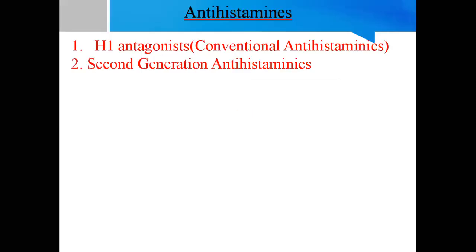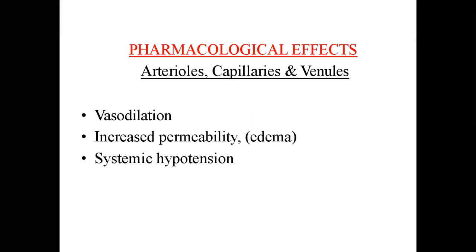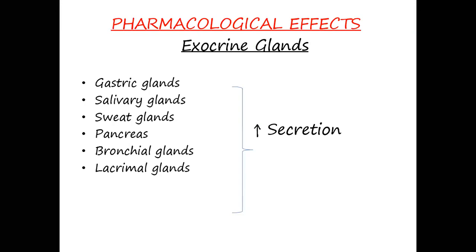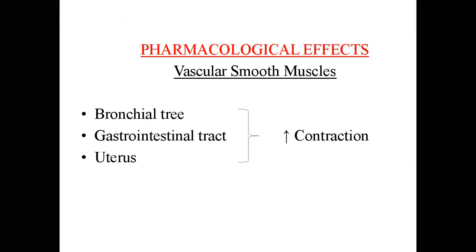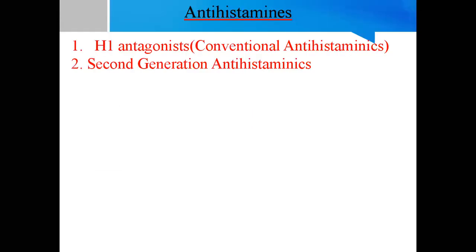Next is antihistamines. Antihistamines — mostly called histamine antagonists — it is very simple: where histamine is released and produces pharmacological effects, the antihistamine will oppose those effects. Whether it is smooth muscle contraction or exocrine gland secretion increase, the antihistamines oppose the effects. This is the H1 antagonist — first-generation and second-generation antihistamines.